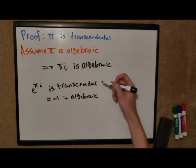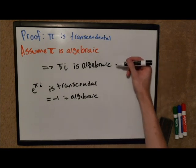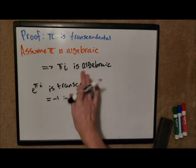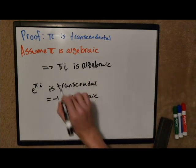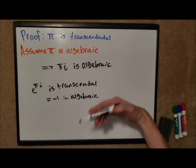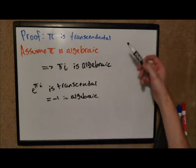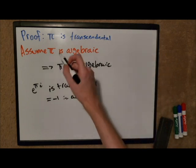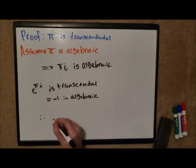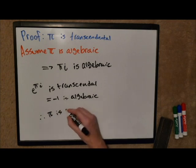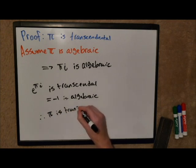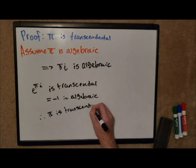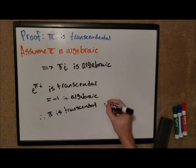So we have to go back up here. Algebraic numbers definitely form a field, we know that for a fact, so this is fine. So finally we kind of come to the conclusion that it must be our assumption that is wrong. Therefore pi must be transcendental. We write the little box there because we're big boys, just to make it official.